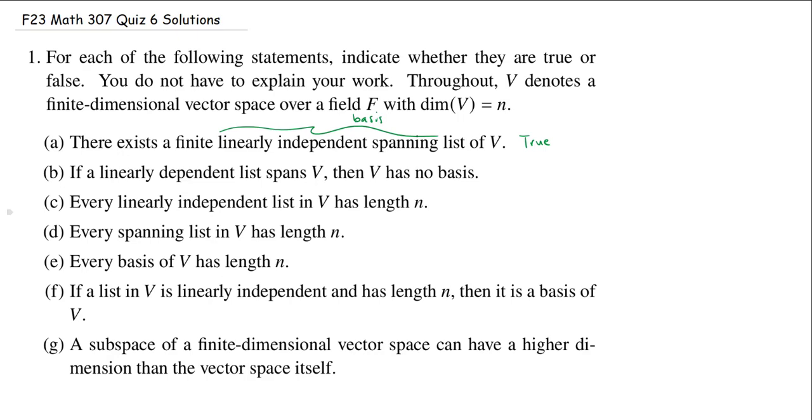If a linearly dependent list spans V, then V has no basis. So maybe you're thinking, to be a basis it has to span and be linearly independent, not dependent. And of course, that is true. That's what you need to have a basis. But just because you have some linearly dependent list that spans doesn't mean V doesn't have a basis. In fact, if I start with a linearly dependent list that spans V, I can reduce it to a basis. We have a theorem that says that. So this statement is false.